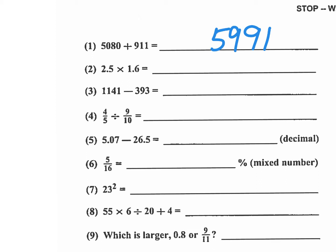Number two, 2.5 times 1.6. What I'm going to do is multiply this one times 10 and divide by 10. So I'm going to have 0.25, which is 1 fourth. 1 fourth of 16 is 4. So the answer is 4.